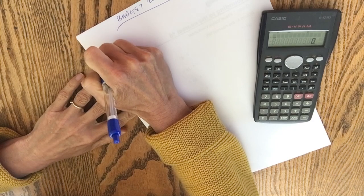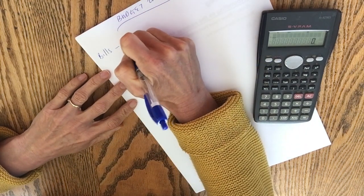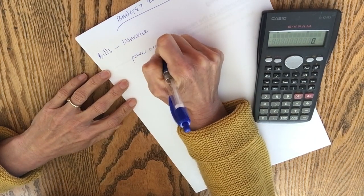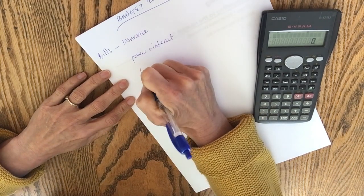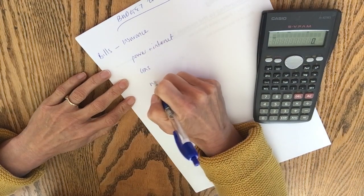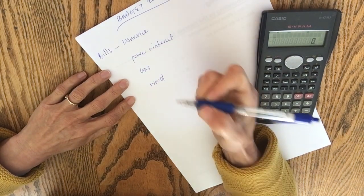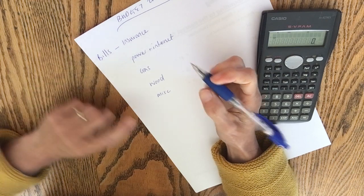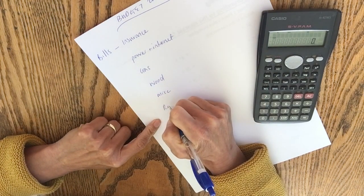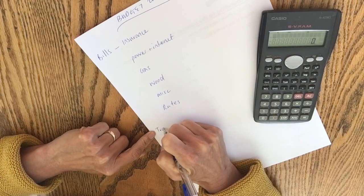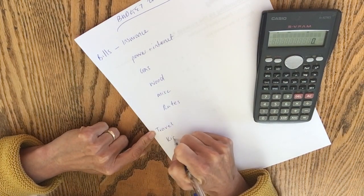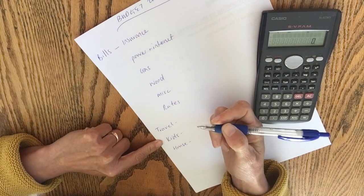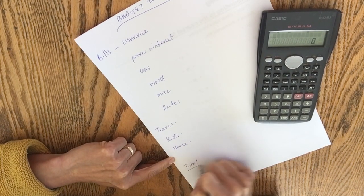And this is what we're doing. So we have bills and in our bills we have insurance, we have power and internet, we have gas, we have wood, we heat our house with a fire and we have miscellaneous. Just for something that I can't think of right at the moment, we have rates and then we have travel. We have a kid's account that we put into regularly. We have a house account that we put into for regular maintenance. And then that'll give us our total that's in the bank.